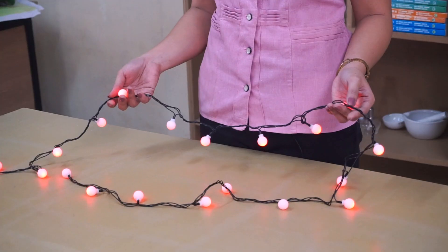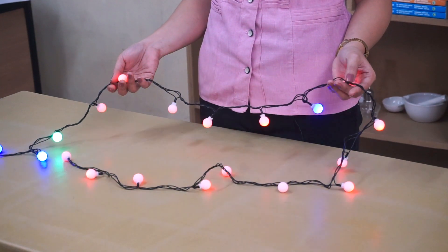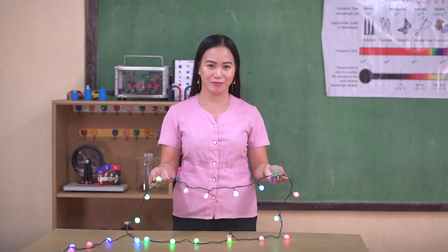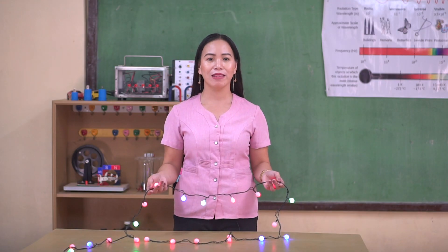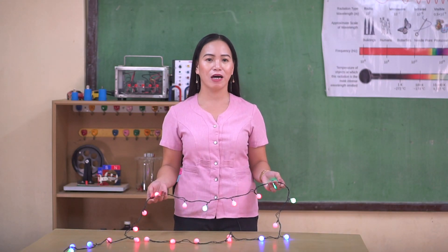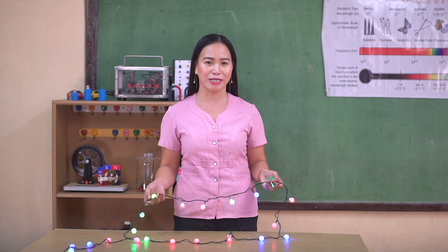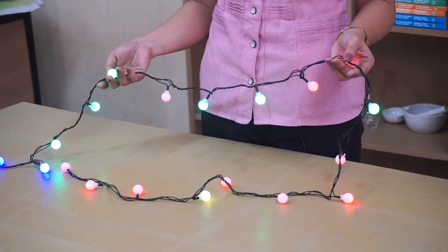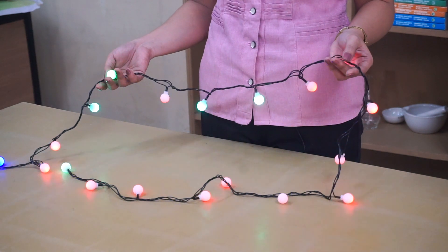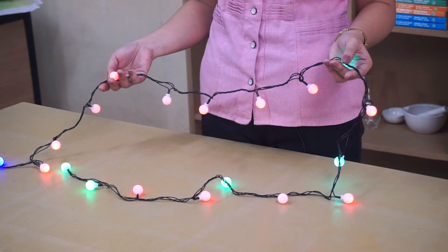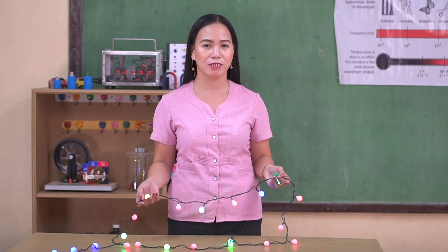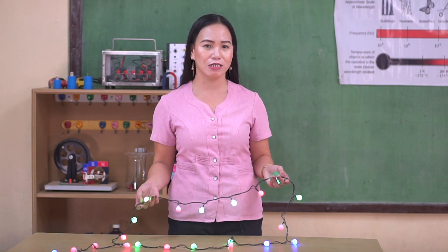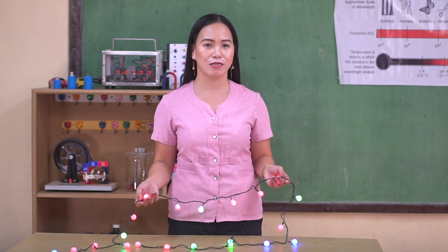Old models of Christmas lights are arranged in a series circuit, such as this one. All lights are connected one after the other to the source. Thus, when one bulb is worn out, it causes a gap or a break in the path, resulting in the other bulbs not lighting up as well, because the flow of current is interrupted.